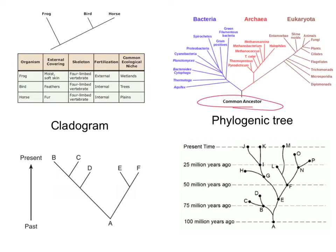One of the ways that we show these relationships is through either phylogenetic trees or cladograms. They're both diagrams that help show the relationships between the various species. They're very similar looking diagrams. Your phylogenetic tree is usually a little more freeform looking, while your cladogram is usually very linear.